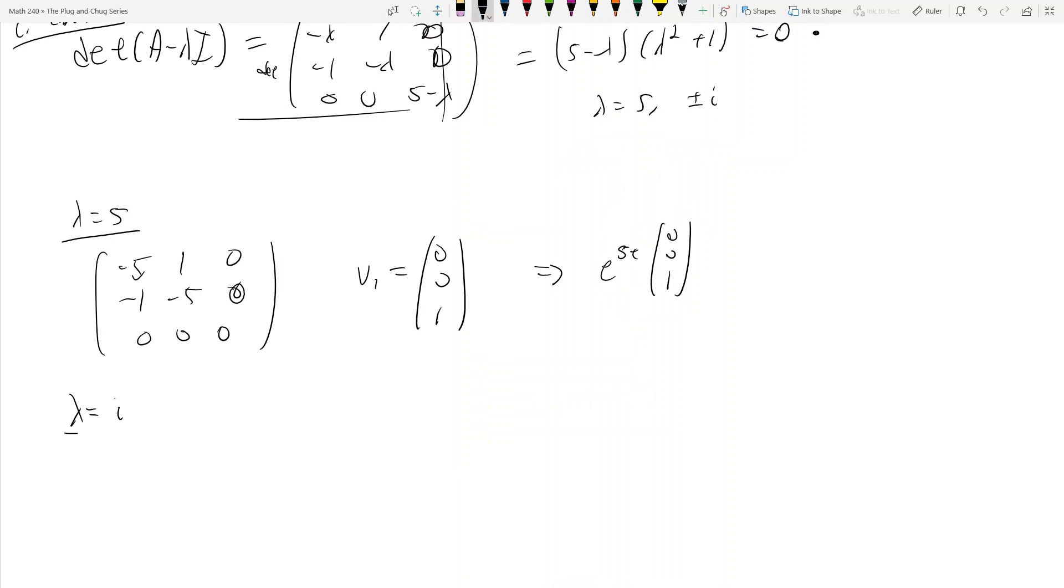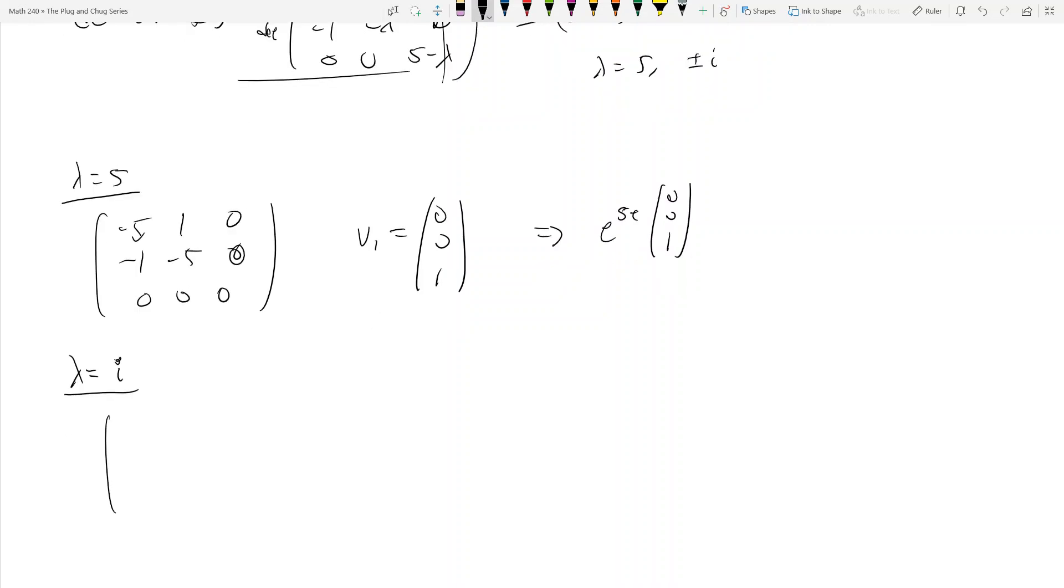Now I need to look at lambda equals i or negative i, right? So remember with the whole complex eigenvalue thing is that you only need to look at one of them because the other one comes for free. And this is the same idea. You only need to look at one eigenvalue and you only need to find one complex eigenvector, which is kind of nice, you know? You only find one.